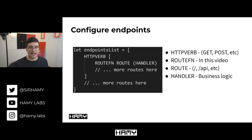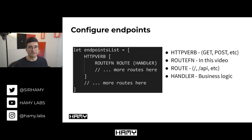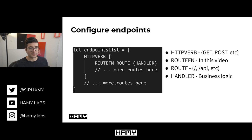We also configure the route, which is the actual string path we're trying to match against - so slash, slash API, slash posts, slash comments, things like that. And then finally we have the handler, which is the actual function that leads into our business logic that we want to call when this route is hit. It's a list so you can have a lot of these all together, but this is the basic format.